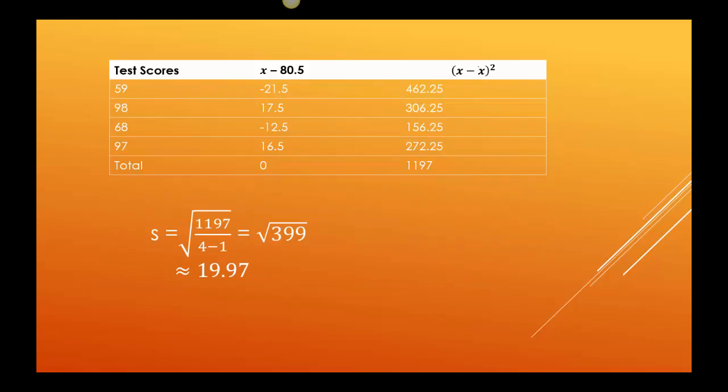So this time, bigger numbers means bigger squares. The negative 21.5, when I squared it, was 462.25. 17.5 squared was 306.25. Negative 12.5 squared, 156.25. And lastly, 16.5 squared, 272.25. I added all those numbers up, and it gave me 1,197. So just like the last one, I'm going to do 4 minus 1 is 3. I had 1197 divided by 3 was 399. Square root of 399 is 19.97. So student B had a much bigger standard deviation. This says the scores went higher and lower than the 80.5 by about 20. So there's a big difference between the standard deviations of the two sets.